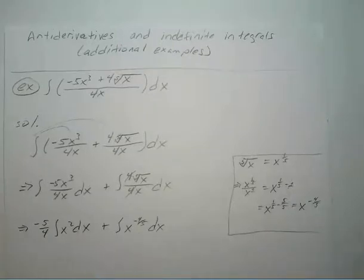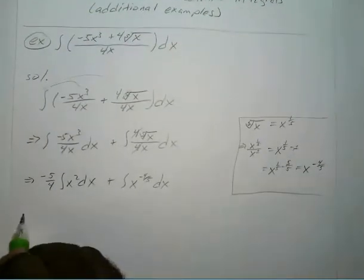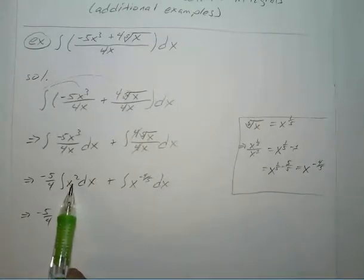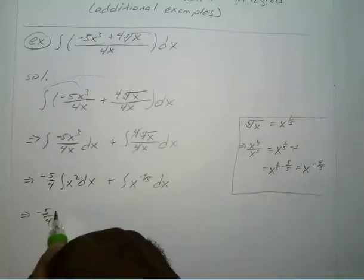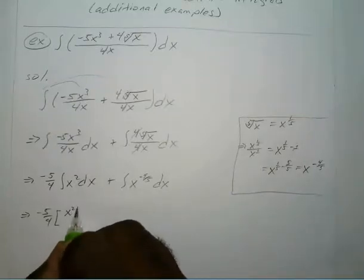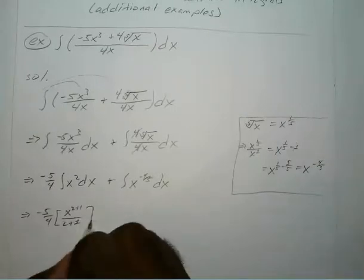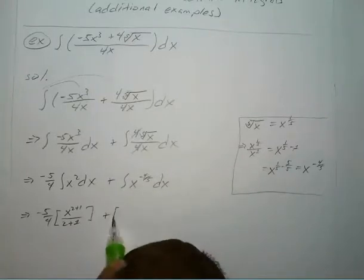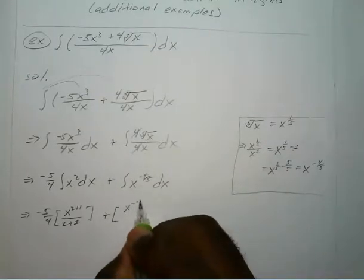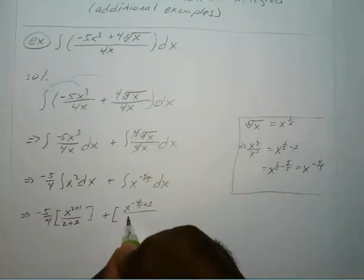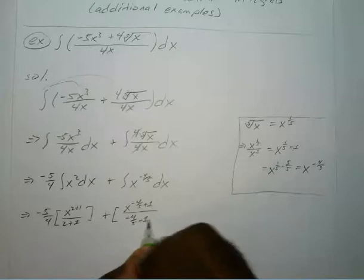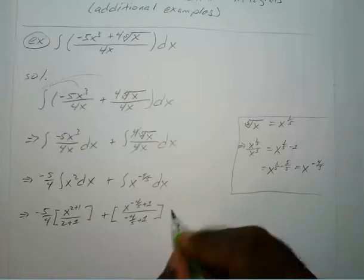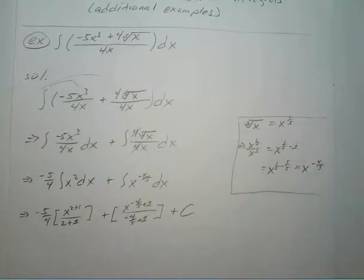So now we go ahead and integrate both of those. We have negative 5 over 4 times the integral of x squared — that's x to the 2 plus 1 over 2 plus 1. And x to the negative four-fifths power integrates to x to the negative four-fifths plus 1. Each term has a plus c; adding those two constants together, you just get one plus c.